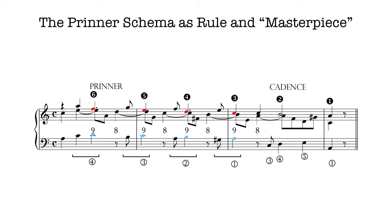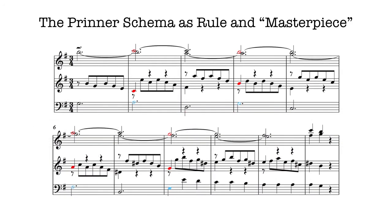So that was the model that one learned as a boy. Here is the same Brineer schema with the same 9-8 suspensions in this early mass of Pergolese.